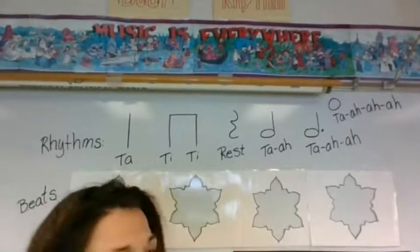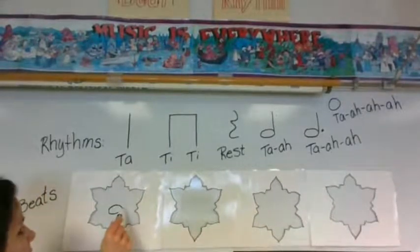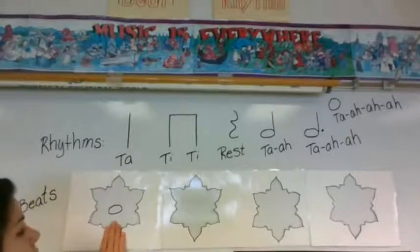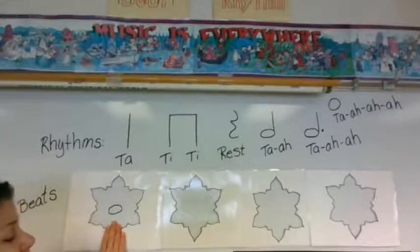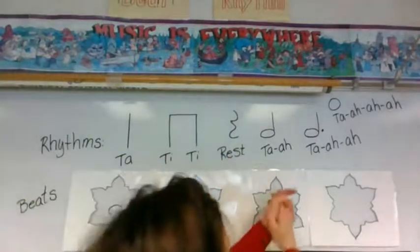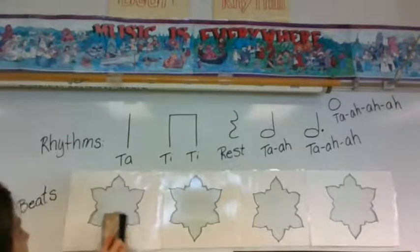So ta-a looks like this. It does not have a stem. It does not have a dot. It's just a note head. And if it's drawn in this first snowflake beat, you hold it over for all four. Ta-a. Now let's practice.